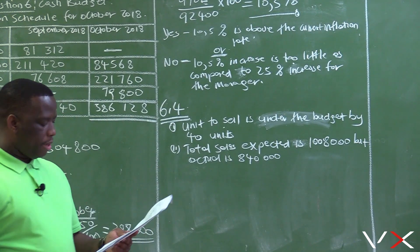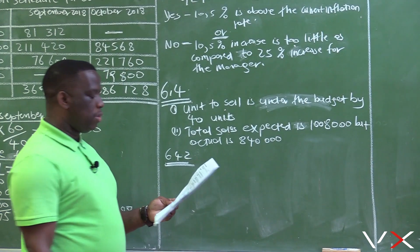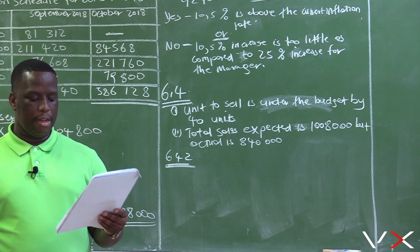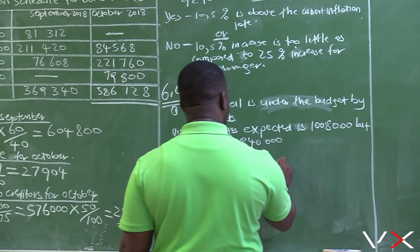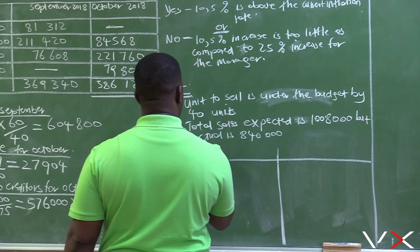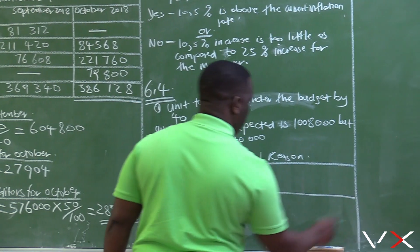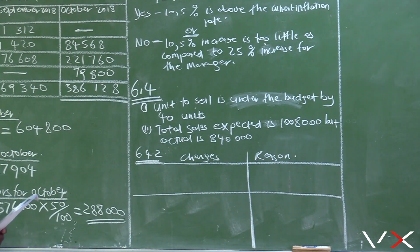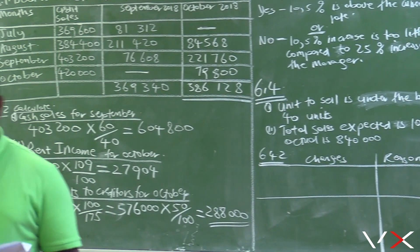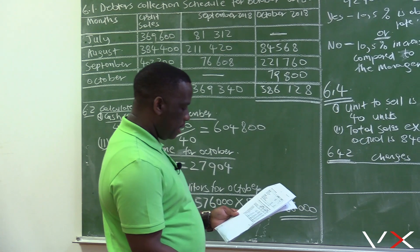6.4.2: Identify two changes Donald implemented in October in response to the new competitor. Give one reason for each change. We want to look at the new changes in October that were implemented.